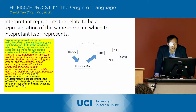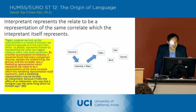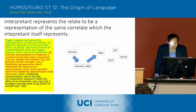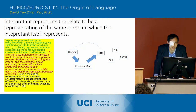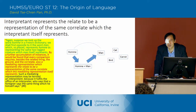And then he says: by further accumulation of instances, it will be found that every comparison requires, besides the related thing, the ground and the correlate, also a mediating representation which represents the relate to be a representation of the same correlate which this mediating representation itself represents.